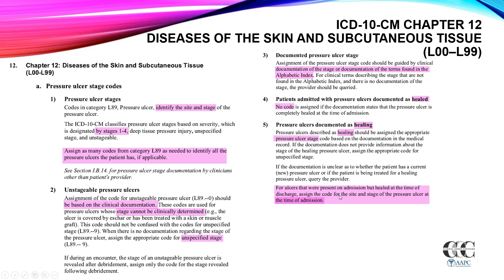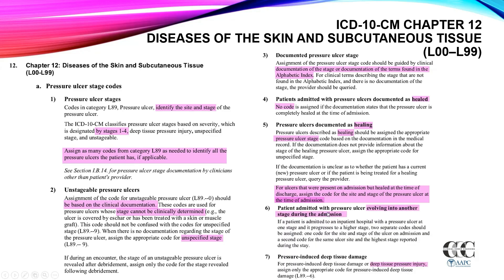For ulcers present on admission but healed at the time of discharge, assign the code for the site and stage at the time of admission. For a patient admitted with a pressure ulcer that evolves to a higher stage during admission, two separate codes should be assigned: one for the site and stage on admission, and a second for the same ulcer site at the highest stage reported during the stay. For pressure-induced deep tissue damage, assign only the appropriate code for pressure-induced tissue damage.